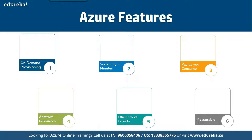Next is scalability in minutes, which means you can scale up or scale down resources in just minutes depending on your requirement. For example, if you build a Windows Server 2019 virtual machine with 2 GB of RAM and later realize that's not enough, you can increase it to 8 GB. You can scale resources up or down very easily.